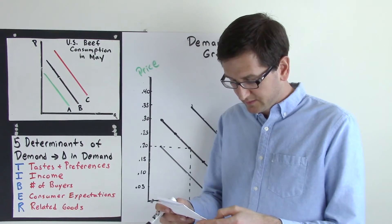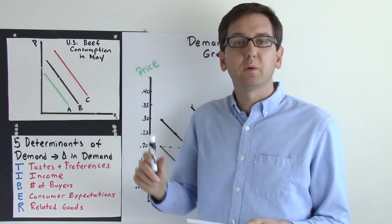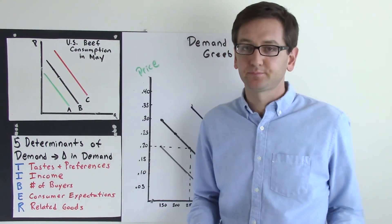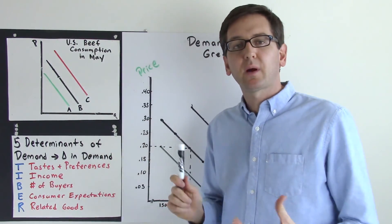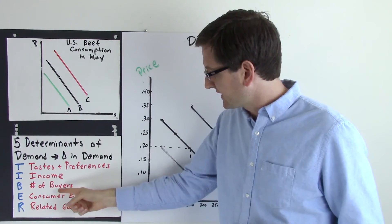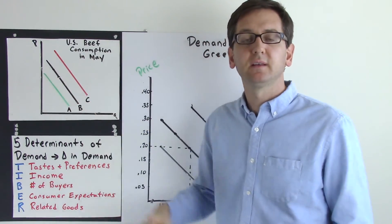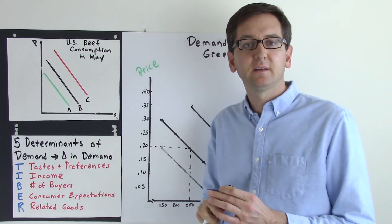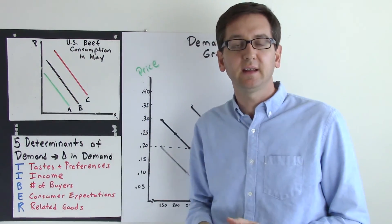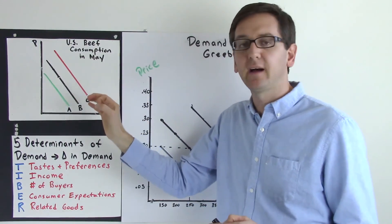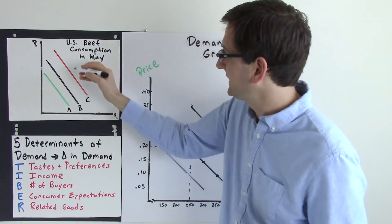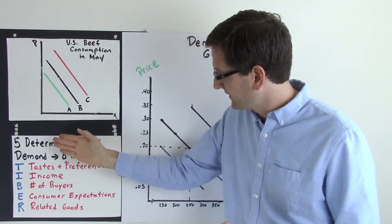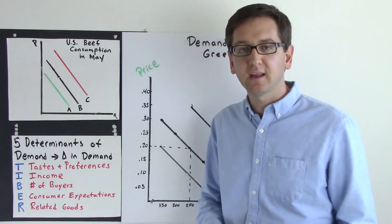The last one: if we read the headline 'Beef prices fall and consumers purchase more beef' — beef prices fall. Which determinant is that? Prices fall — that doesn't cause a shift in demand. That simply causes a change along the demand curve. As prices decrease, the quantity demanded increases. That's what that headline was saying: prices fell and more people bought beef. So that's just a shift along the curve showing a change in quantity demanded, as opposed to the five determinants that actually cause a change in demand.